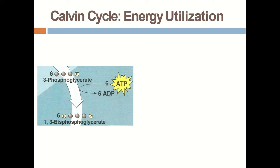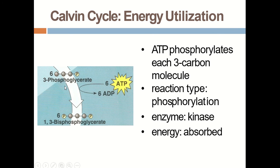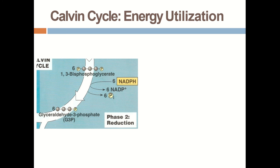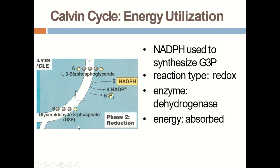Energy utilization in the Calvin cycle: 3-phosphoglycerate is converted into 1,3-bisphosphoglycerate by utilizing 6 ATP molecules. The reaction type is phosphorylation and the enzyme is 3-phosphoglycerate kinase. Another step of the reduction phase is the generation of glyceraldehyde-3-phosphate, which involves the enzyme 1,3-bisphosphoglycerate dehydrogenase. This is a redox type of reaction with enzyme dehydrogenase.